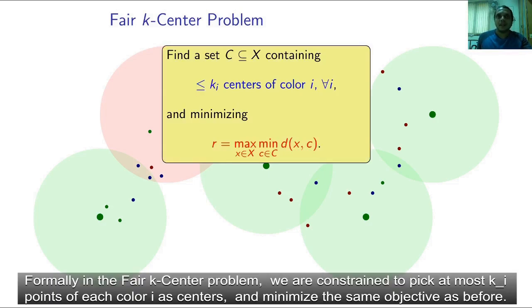Formally, in the fair k-center problem, we are constrained to pick at most k_i points of each color i as centers and minimize the same objective as before.